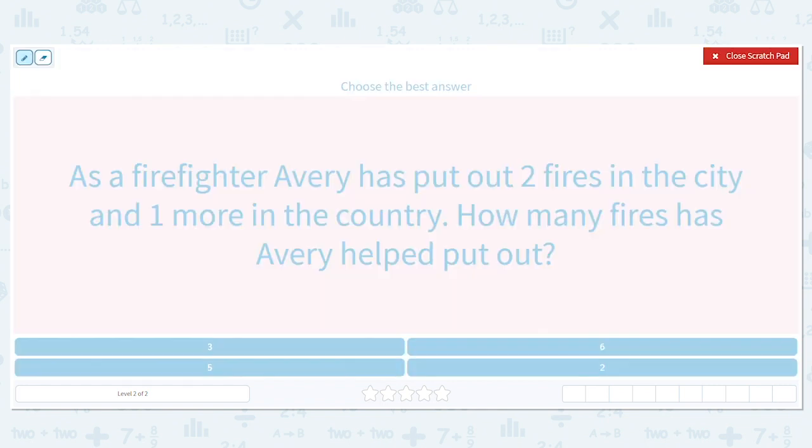All right, let's underline and circle our important information. How many fires did she put out in the city? Two. How many more in the country? One more. And then we want to know the total. How many means we add.